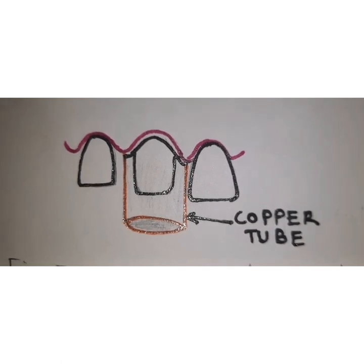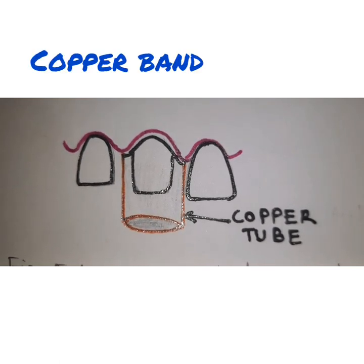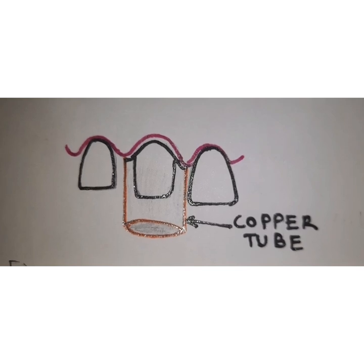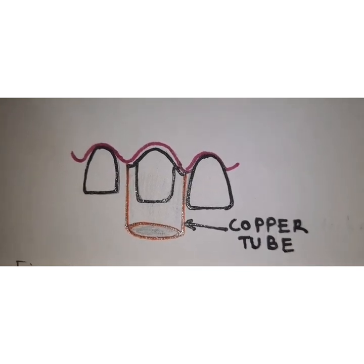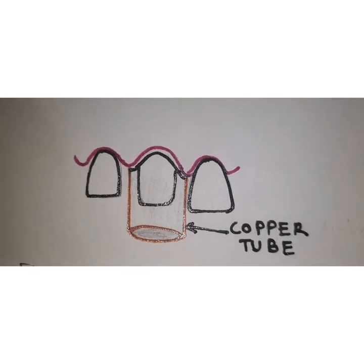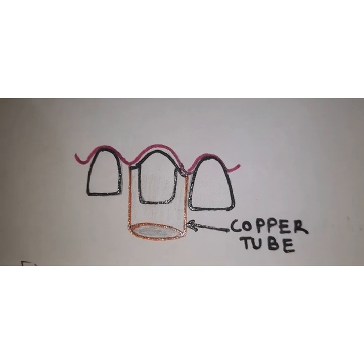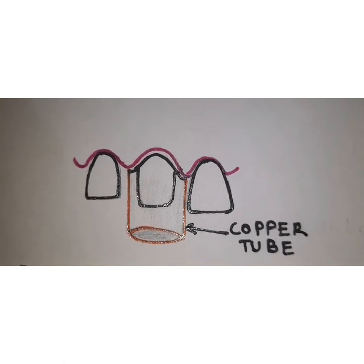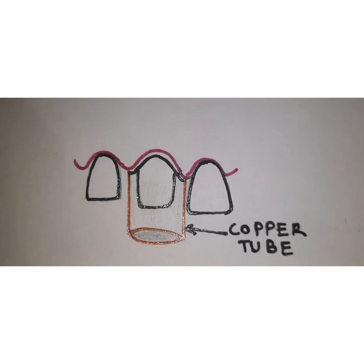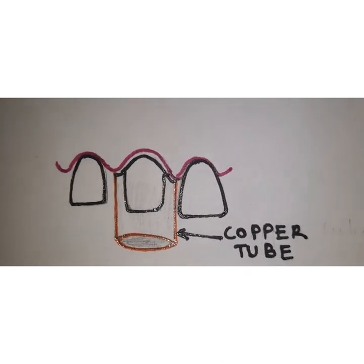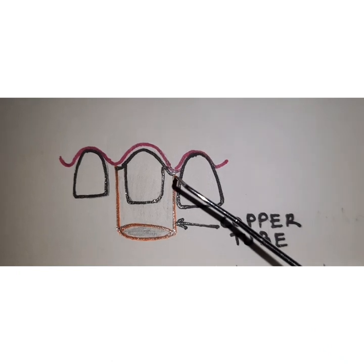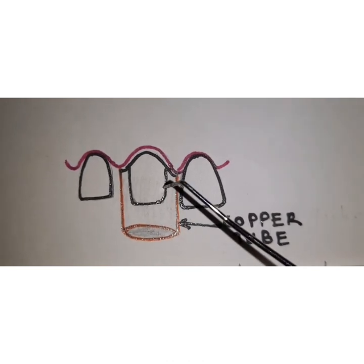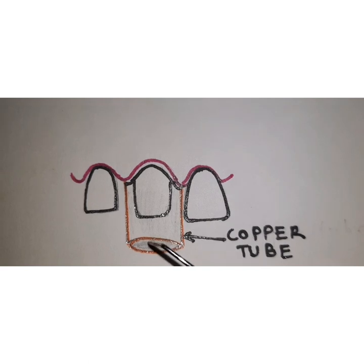The copper band technique involves contouring and trimming a copper tube according to the prepared tooth as seen in the figure. This copper tube basically acts as a receptacle to carry the impression material, and also mechanically displaces the gingival apically in order to expose the finish lines.